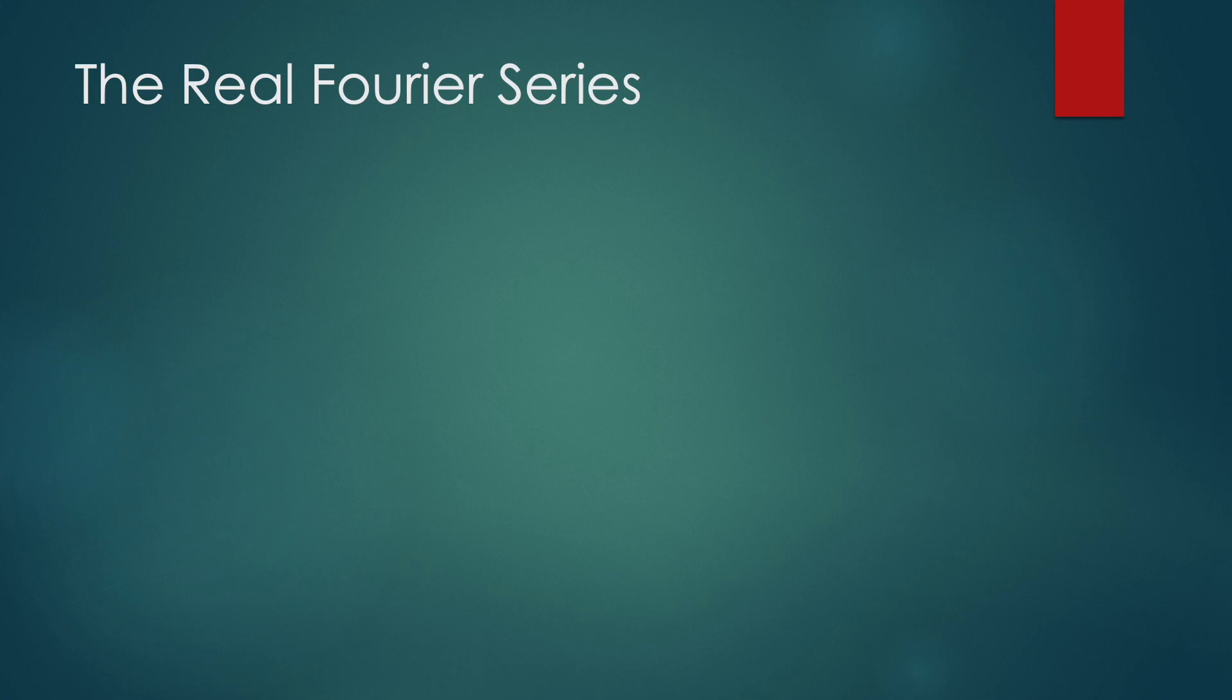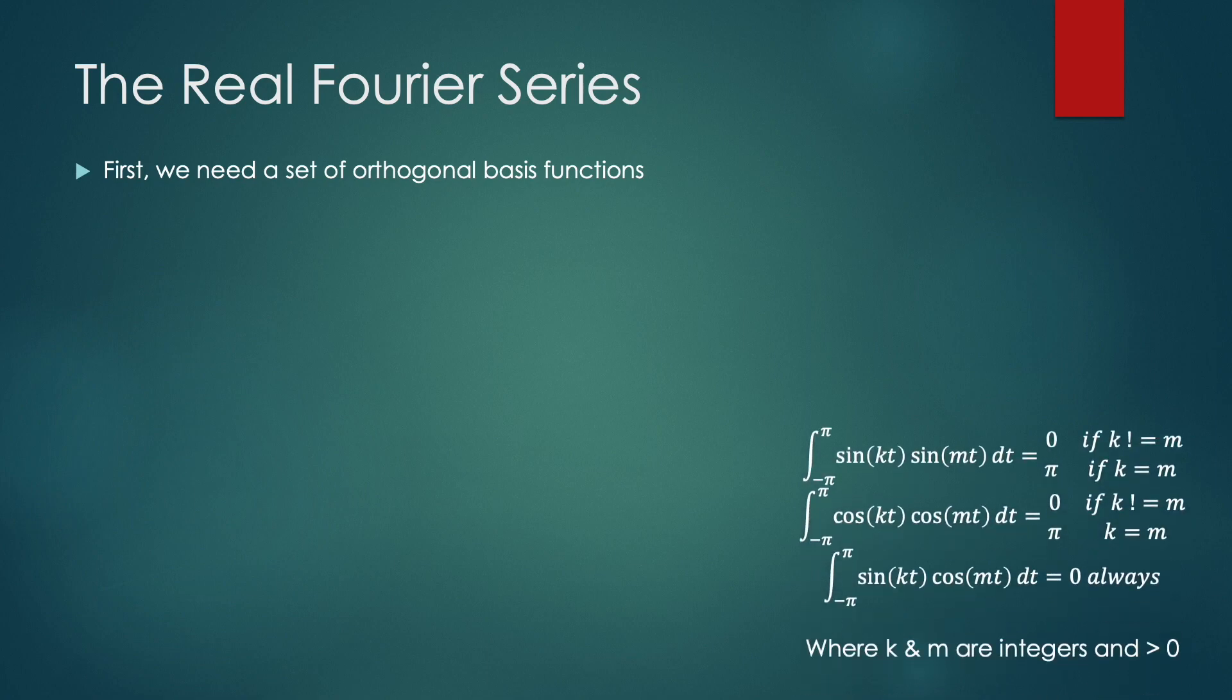So now that we understand how to decompose a vector into a set of orthogonal basis vectors with the inner product, and we know that the inner product can be applied to functions, we're ready to derive the Fourier series. And we'll start with the real Fourier series. So we need a set of orthogonal basis functions. And for the real Fourier series, we use cosines and sines that have some integer multiple of a base frequency. And I'm going to use the base frequency of 1 over 2π. You can prove that these are orthogonal with the equations in the bottom right. If you want to see the actual proofs behind it, you can find them online pretty easily. I find the proofs that use trig identities to be the easiest to follow.